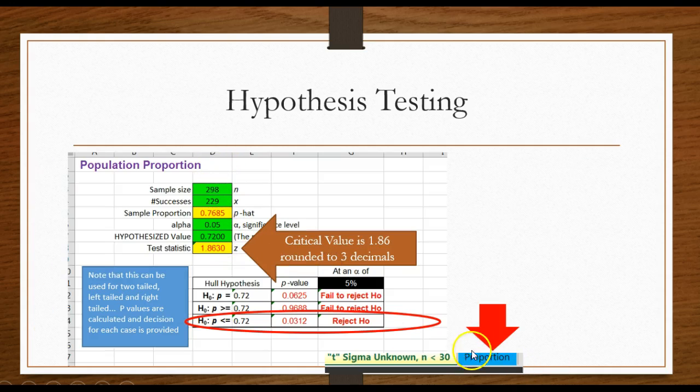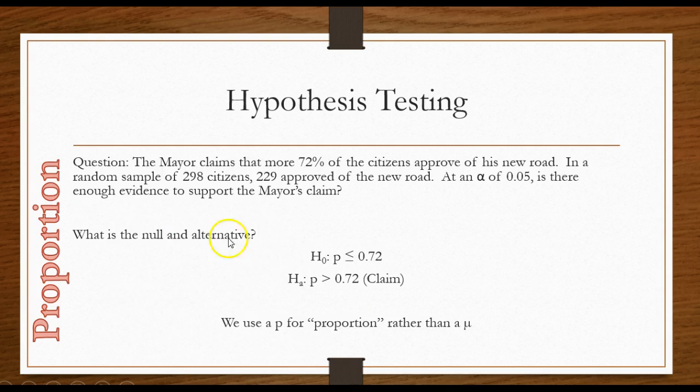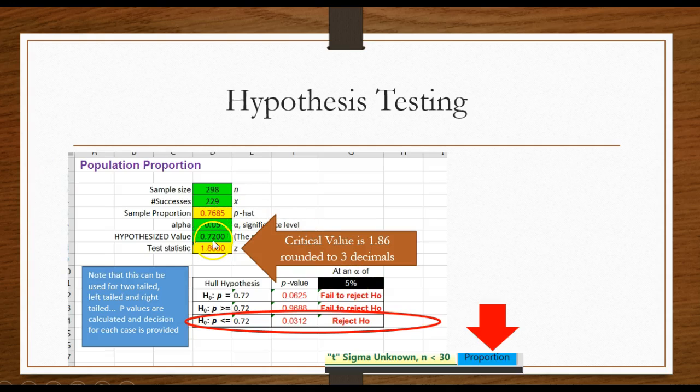I just go to the proportion tab on my hypothesis testing file. I put in the 298, the 229 is the number of successes. Remember, you might have to calculate the number of successes if they said 77% of the 298. I would simply type in here equals 0.77 times 298 to get that value or do it on a calculator before and plug it in. Alright, you do not mess with the yellow cells. Here's my alpha, my hypothesized value. Remember, that was greater than 0.72, so I put in 0.72 here.